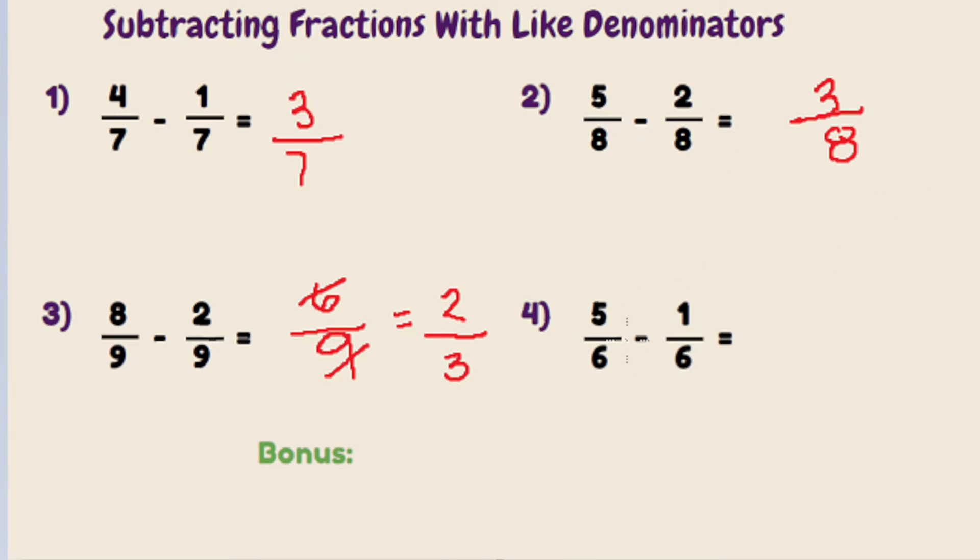Last example, 5 sixths minus 1 sixth. Step one, 5 minus 1 is 4. Keep our denominator of 6 the same. And we have 4 sixths. What's a common factor? Well, 2 goes into both of them. So let's divide 4 by 2 and 6 by 2. And again, we get 2 thirds.